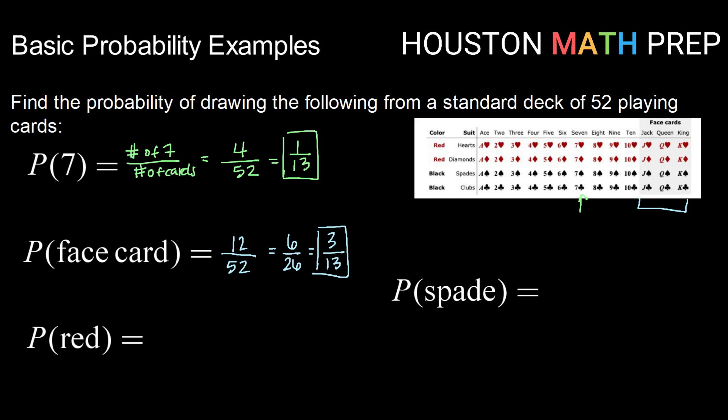Next, checking out the probability of drawing a red card. Once again, there are 52 cards. And how many cards are red? Well, hearts are red and diamonds are red. There are 13 hearts and 13 diamonds. So in total, there are 26 red cards. Reducing 26 and 52, that gives us the probability of drawing a red card is 1 half.